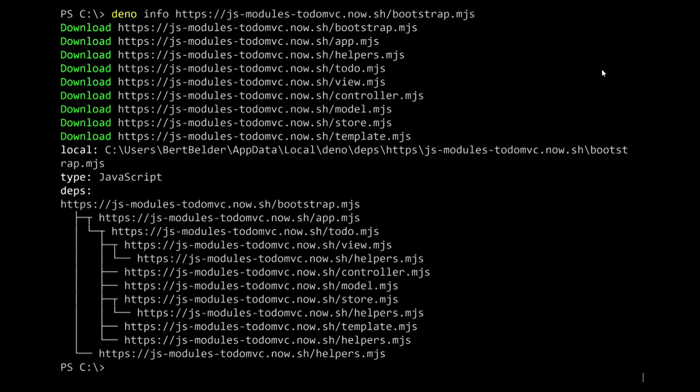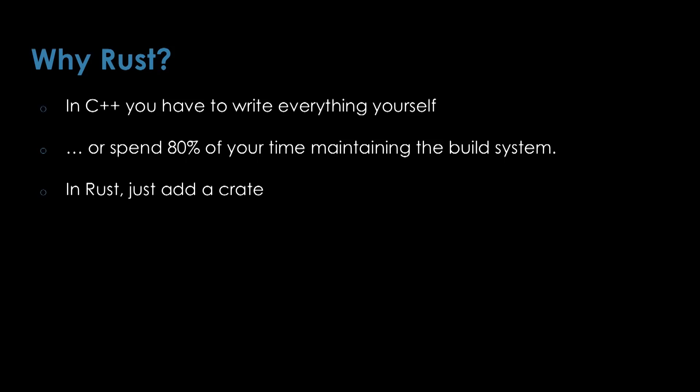There's one more thing I need to tell you about Deno — it's written in Rust. Why is that really so special? Well, one of the big issues with C++, which is what Node.js is written in, is that you basically have two options. You write everything yourself — this is how Chrome is developed; Google writes everything and figures out a way to glue it all together. But if you are just two open source maintainers, you don't have time for that, which means you're going to use other people's libraries and spend basically all your time maintaining the build system.